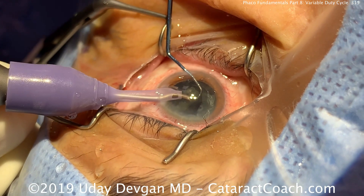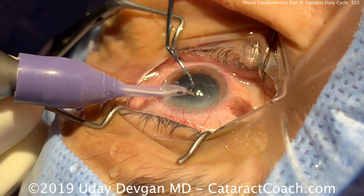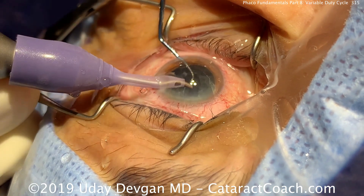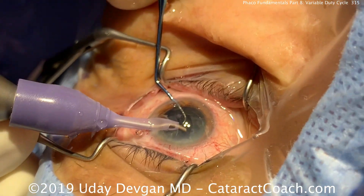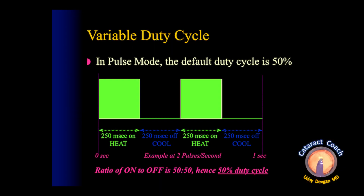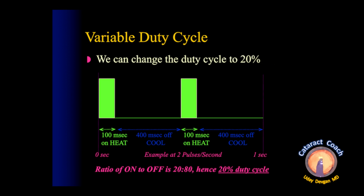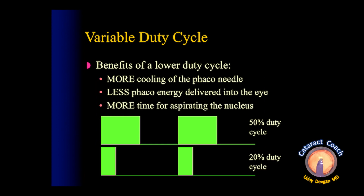When we apply this and use it, it works quite well. The advantage of giving energy in pulses or bursts is less total energy delivered. At a 50% duty cycle, each on period equals the off period — 50/50. But we can change it to 20% on and 80% off — that's a 20% duty cycle.